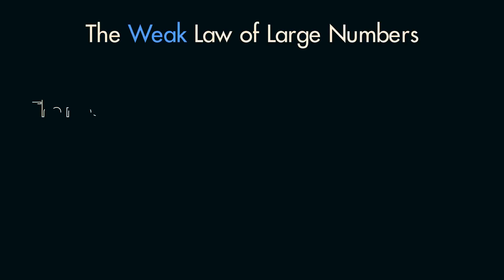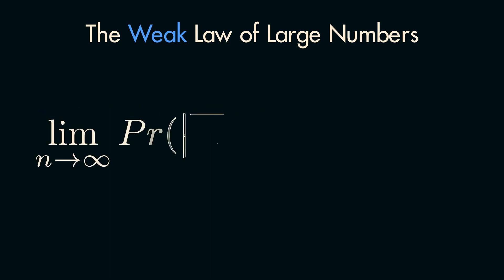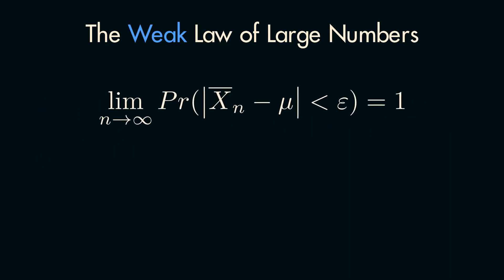Starting with the weak law, it states that the mean of the sample will converge in probability to the expected value of its respective probability distribution, as the number of samples goes to infinity. This is shown in the following statement. On first glance, this might look like a bunch of math gibberish, but let's break it down.